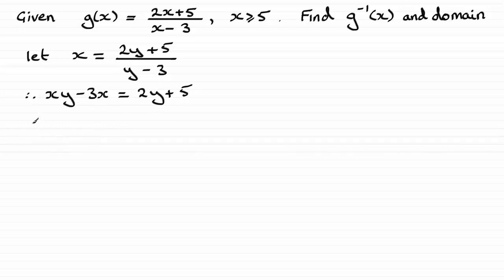So let's subtract the 2y from both sides and I'm also going to pull out y as a common factor. So we've got y multiplied with the x here and then we've got minus 2y so put minus 2 there and that's going to equal 3x plus 5.